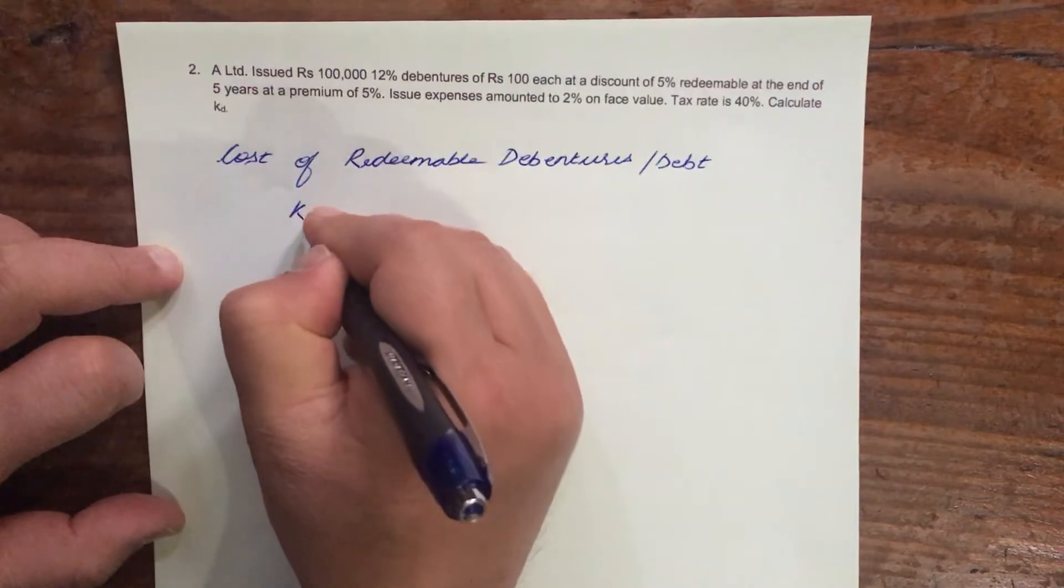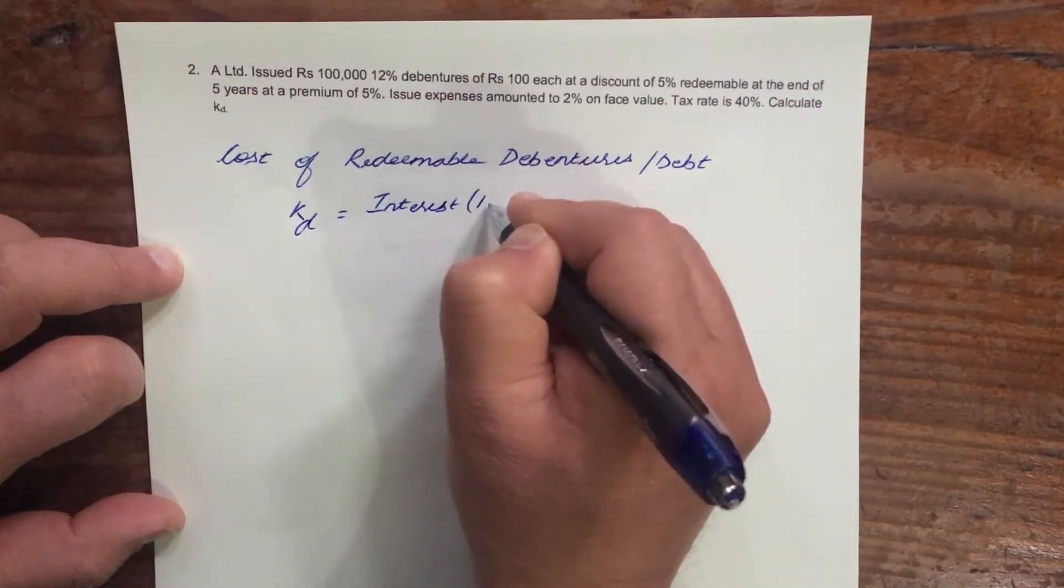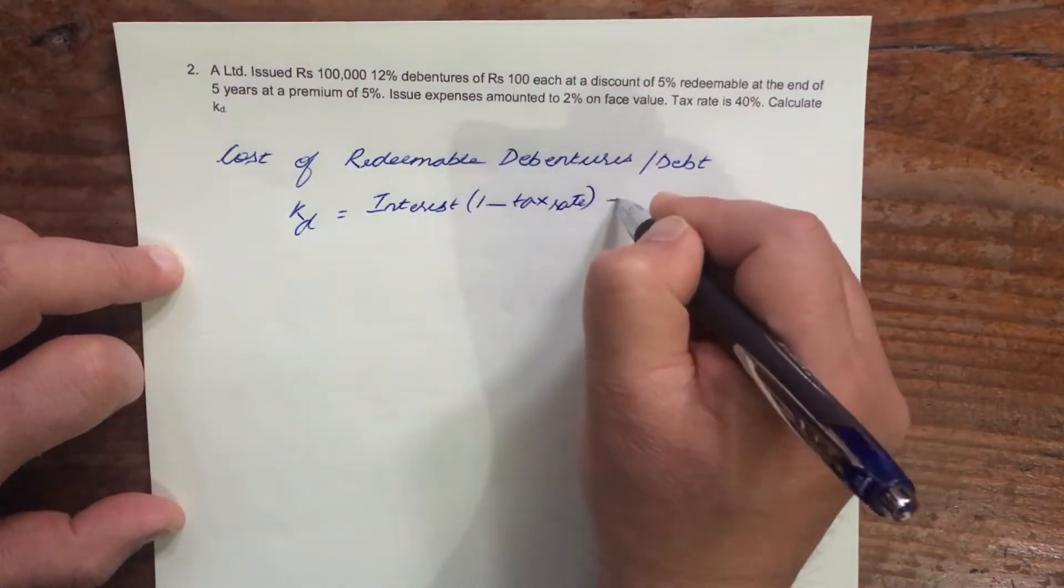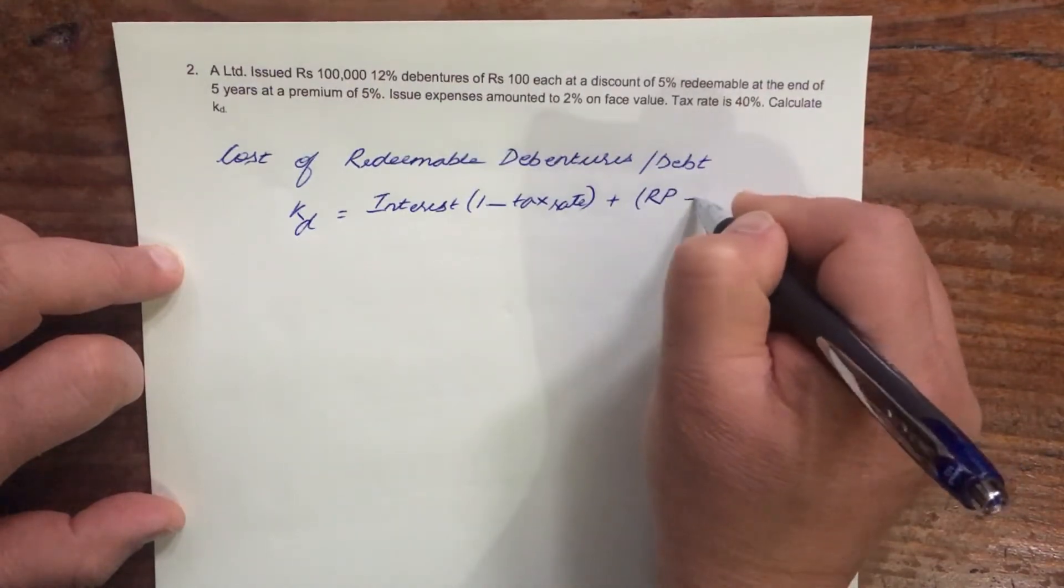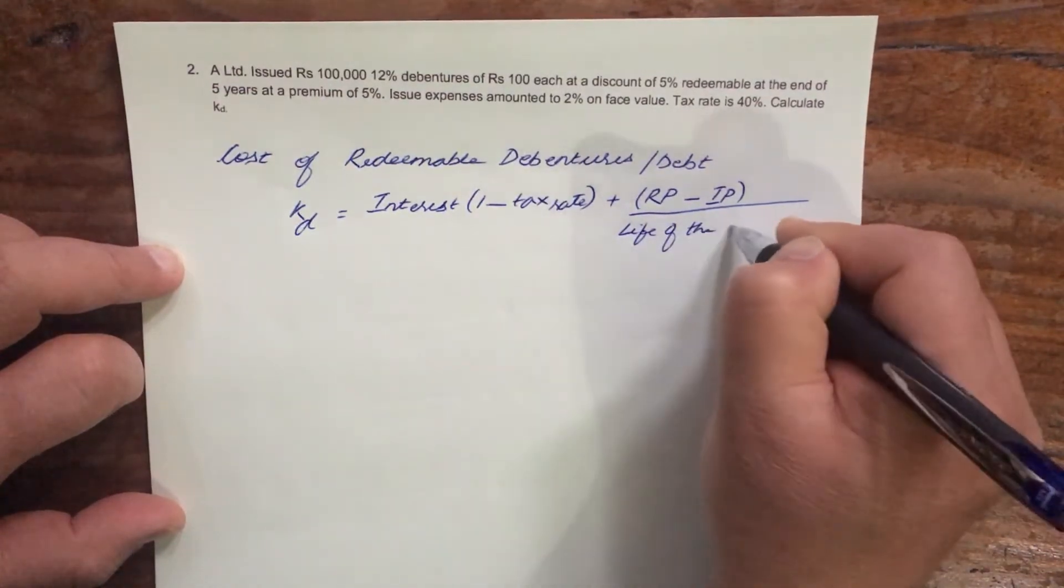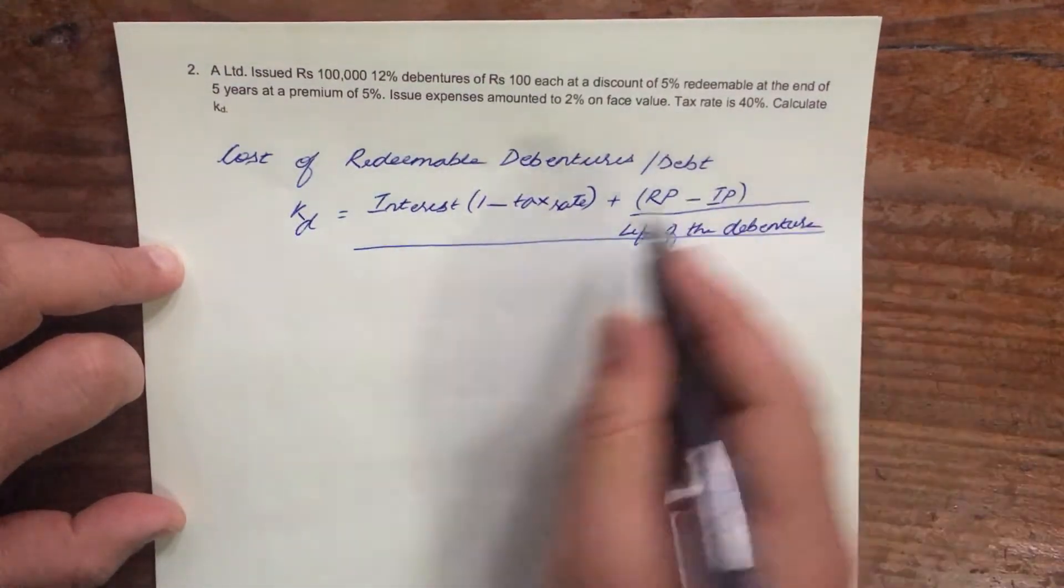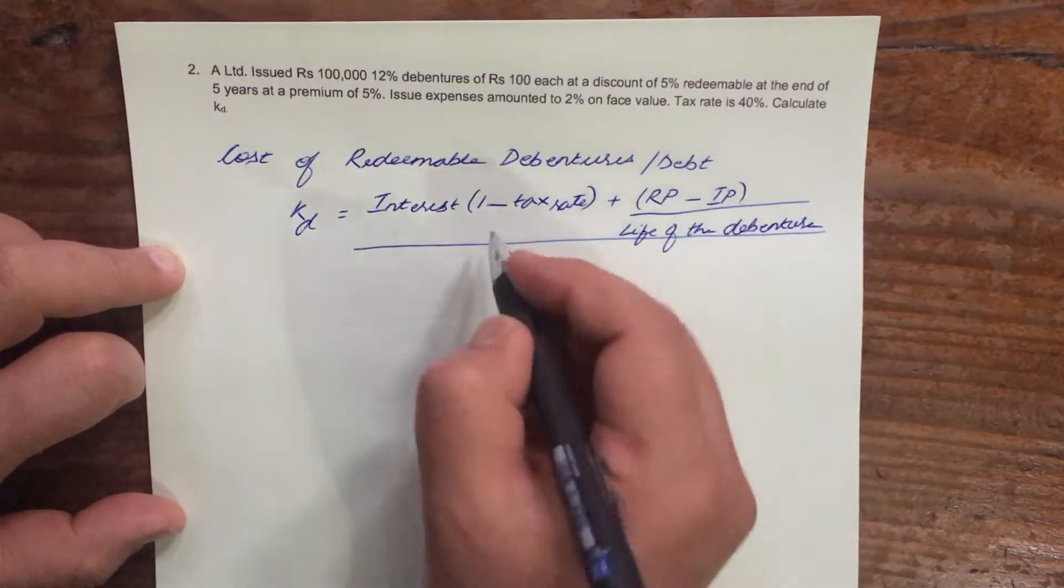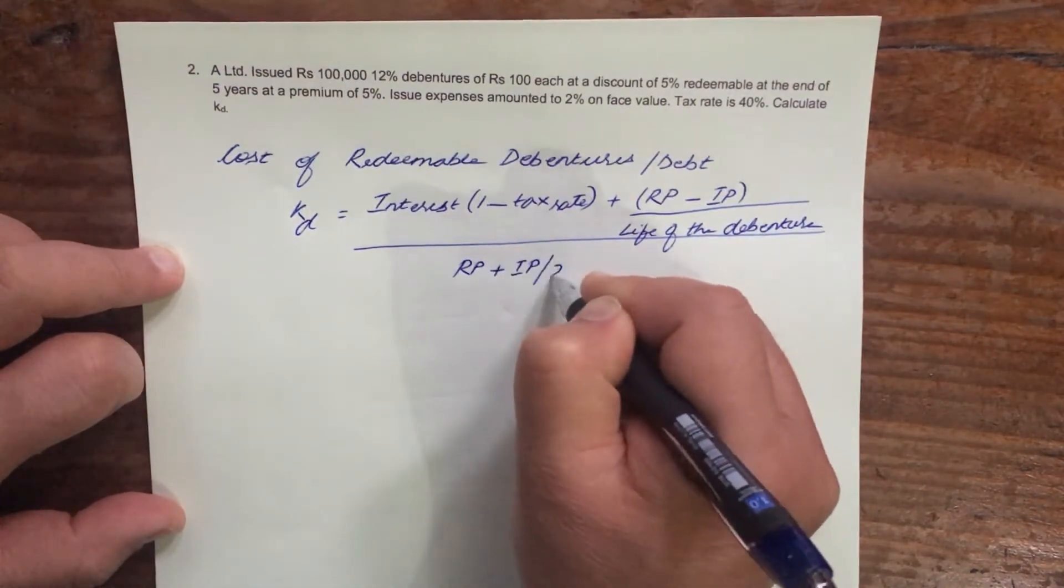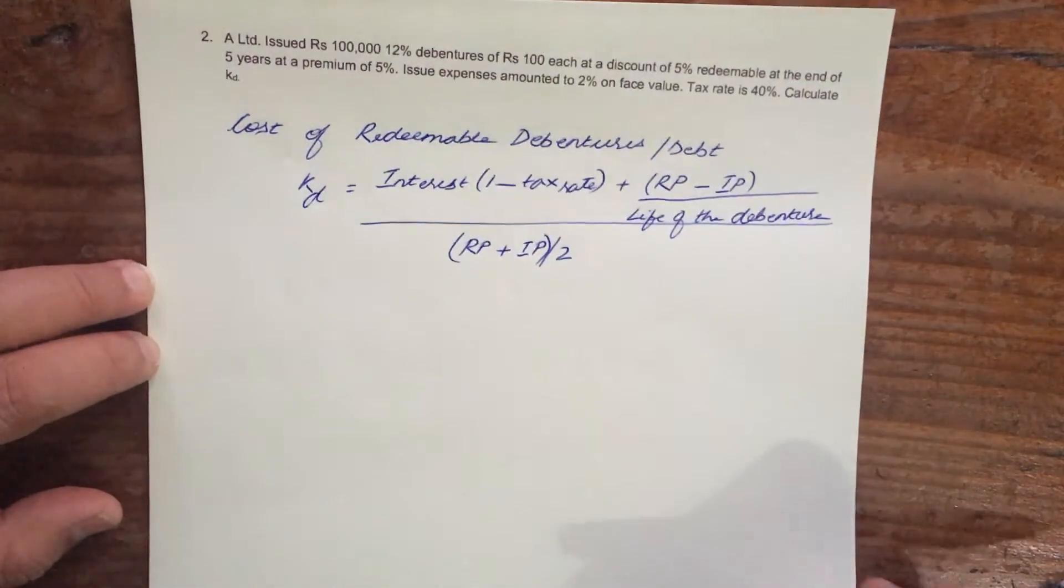So cost of redeemable debentures or debt, KD is equal to interest into 1 minus your tax rate plus Rp, I will tell you what Rp is, minus Ip divided by the life of the debenture. Now Rp is redemption price and Ip is net issue price. Same thing here, Rp plus Ip divided by 2. So that is the formula for finding out the cost of redeemable debenture or debt.